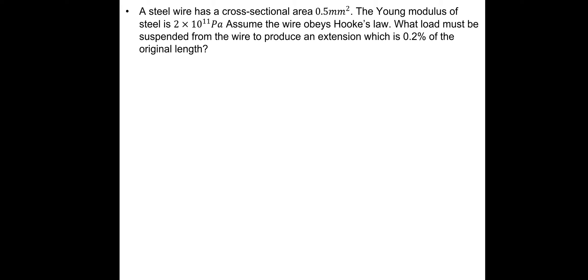Pause and have a go. A steel wire has a cross-sectional area 0.5 millimeters squared. The Young's modulus of steel is 2 times 10 to 11 pascals. Assume the wire obeys Hooke's law. What load must be suspended from the wire to produce an extension which is 0.2% of the original length?